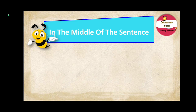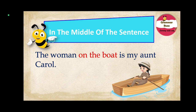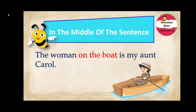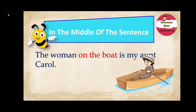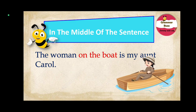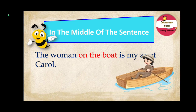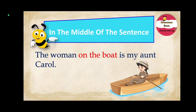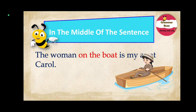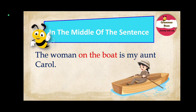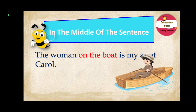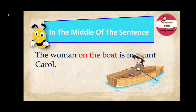An adjective phrase appearing in the middle of the sentence, or just after the noun it modifies. Let us take the example sentence: 'The woman on the boat is my aunt Carol.' Here, 'on the boat' is the adjective phrase that gives information about the noun 'woman' and appears in the middle of the sentence, just after the noun it modifies.